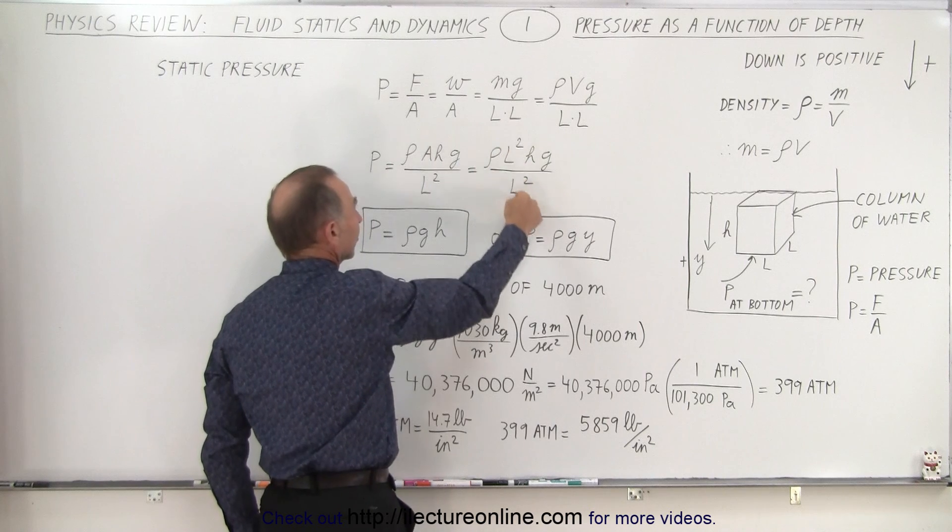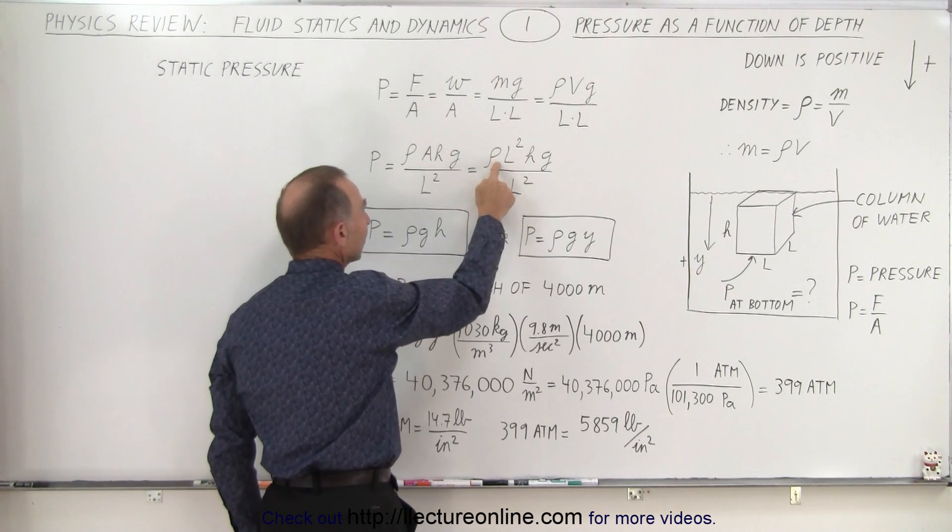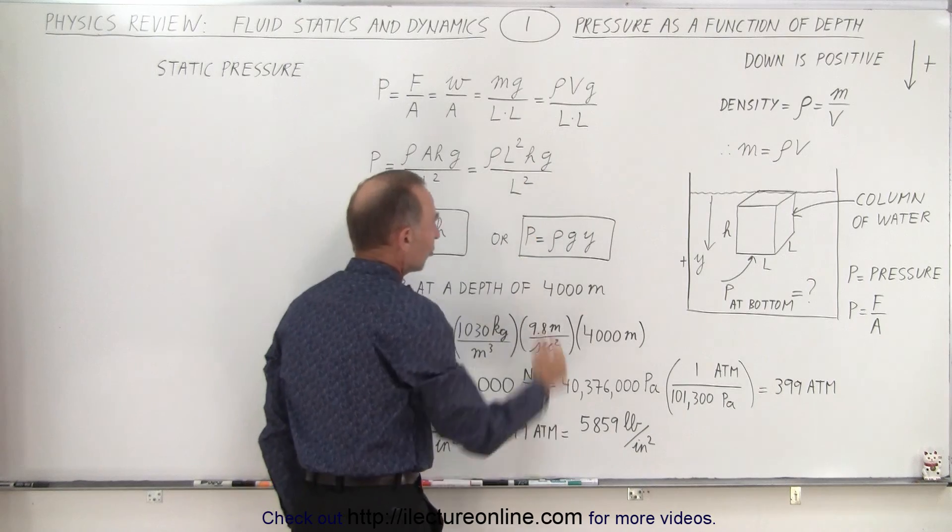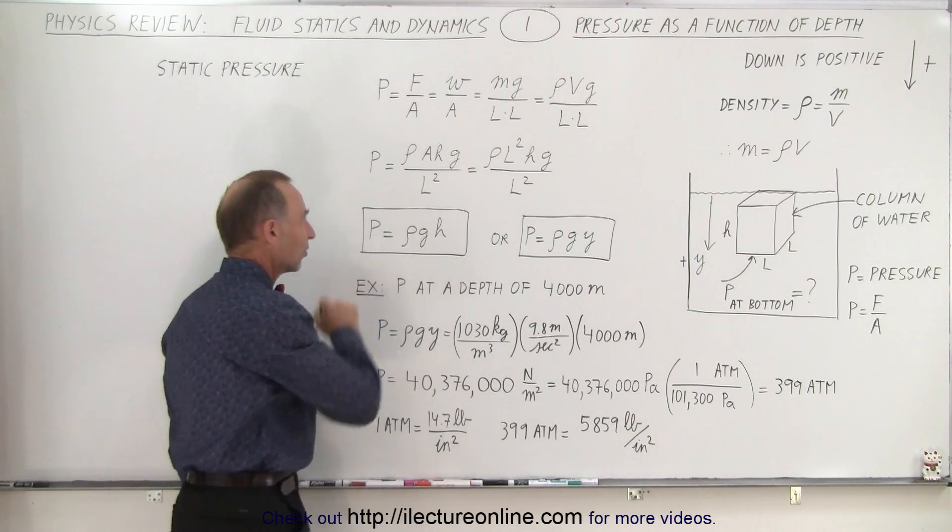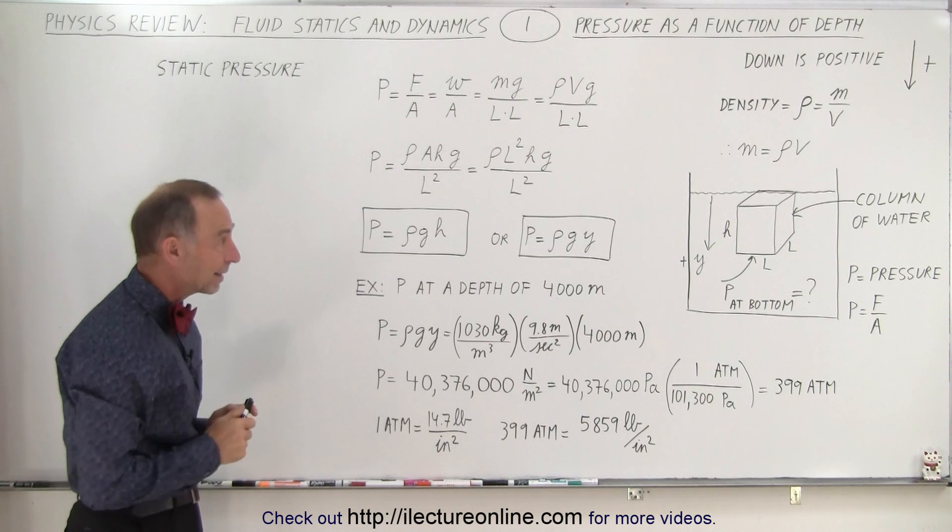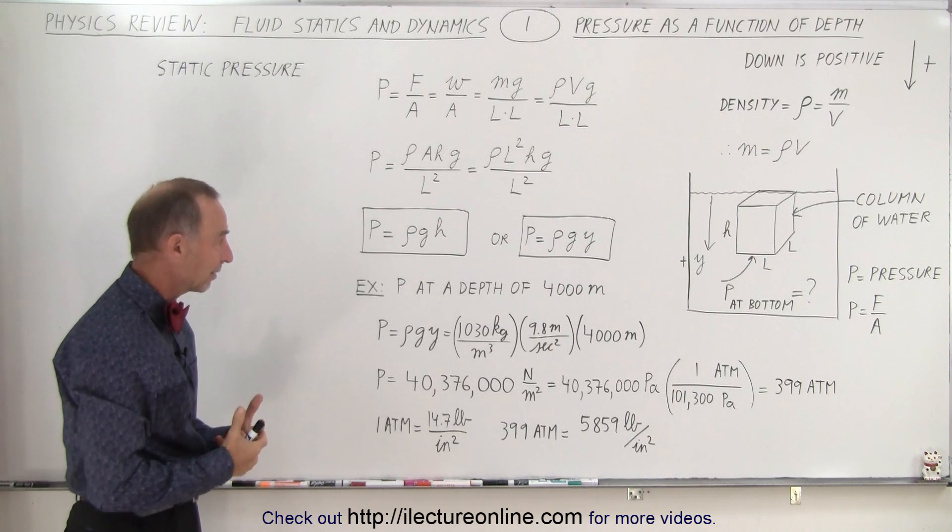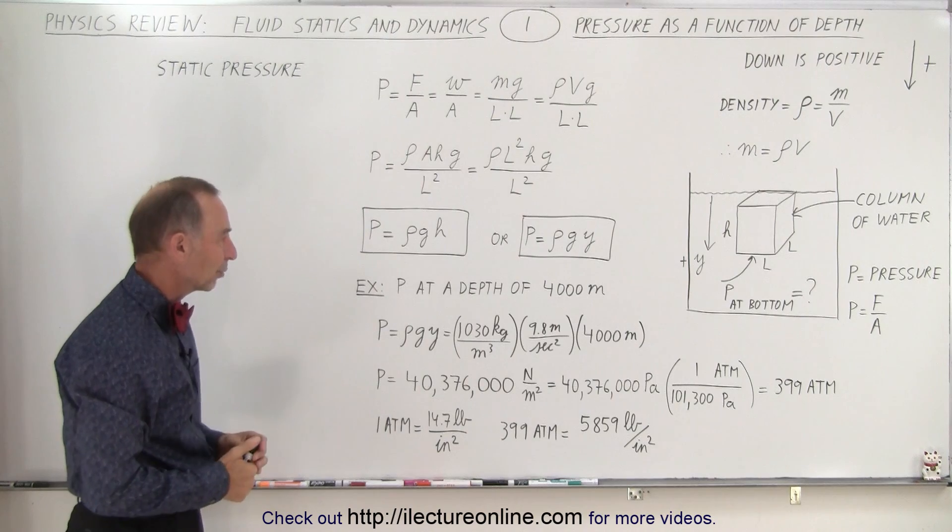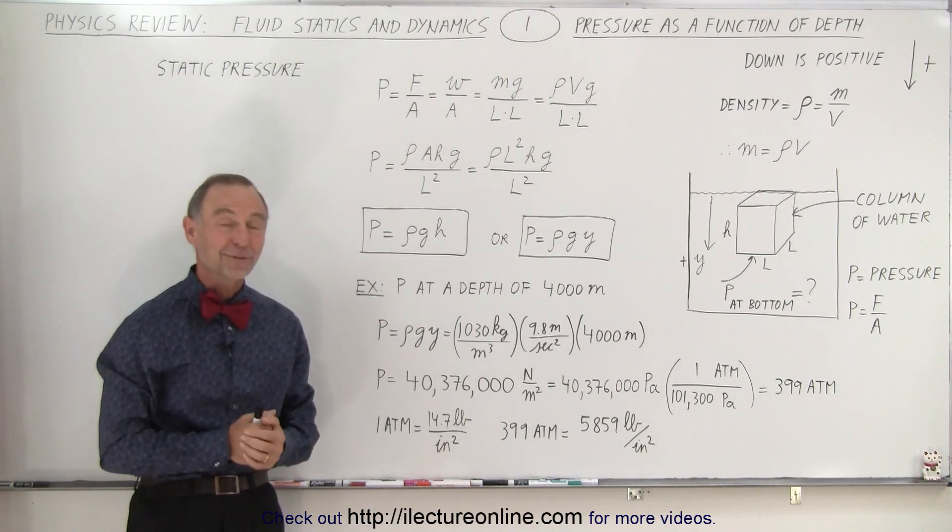The areas cancel out, giving us pressure equals ρhg. We usually write it as ρgh. It's important to understand this derivation because we need to apply it in many different contexts. Once we understand the derivation, we can apply it properly. That is how it's done.